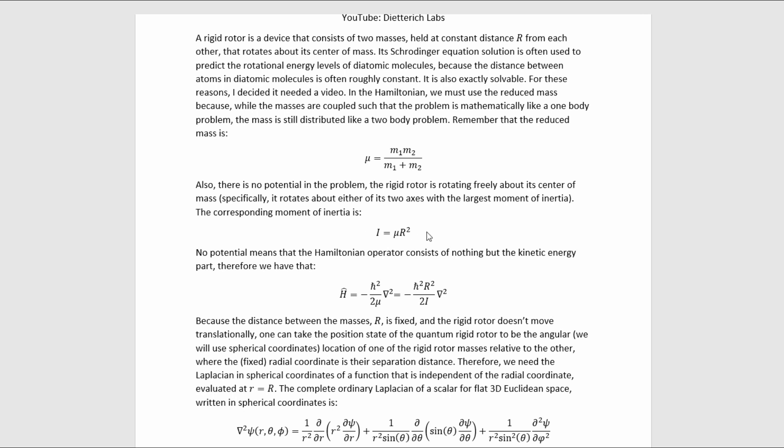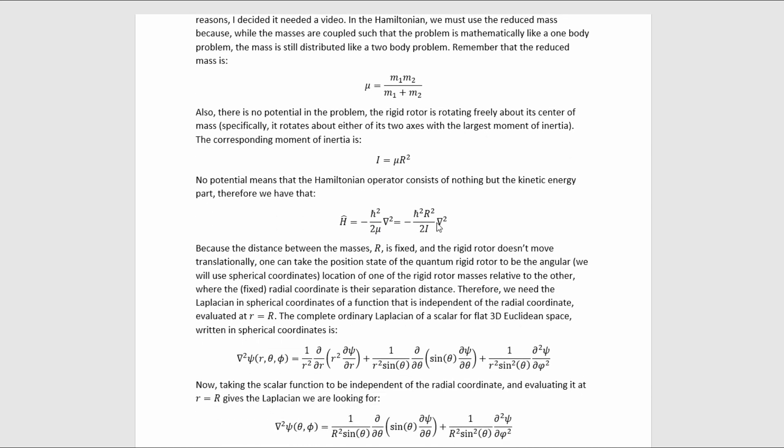This is the moment of inertia for a rigid rotor rotating about its center of mass. No potential means that the Hamiltonian operator consists of nothing but the kinetic energy part. Therefore, we have this as our Hamiltonian, where I've rewritten it in terms of the moment of inertia.